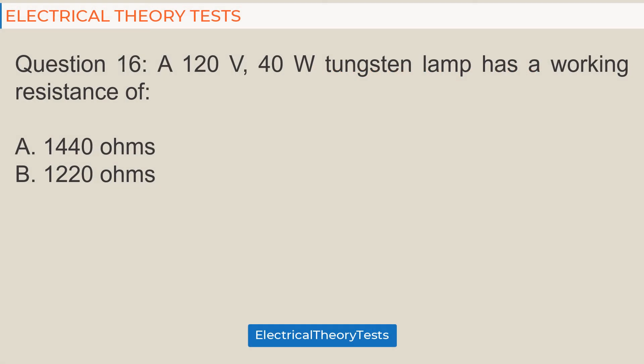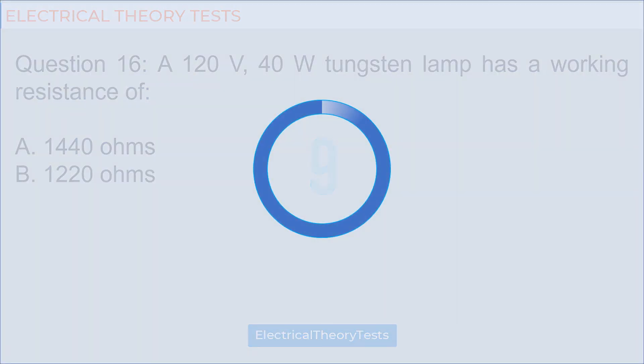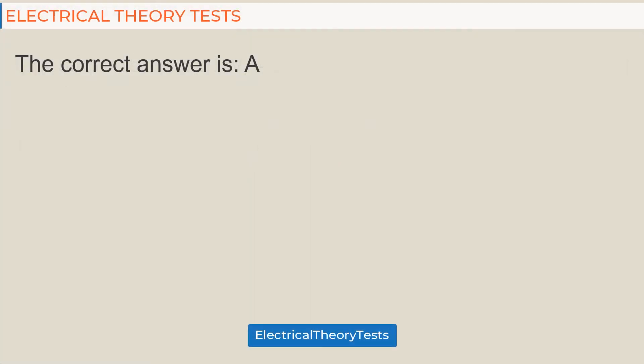Question 16: A 120 V, 40 W tungsten lamp has a working resistance of: A: 1440 ohms, B: 1220 ohms. The correct answer is A.